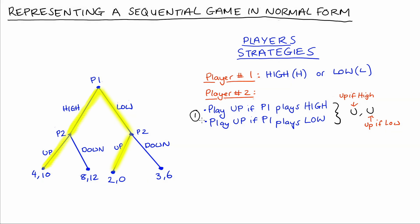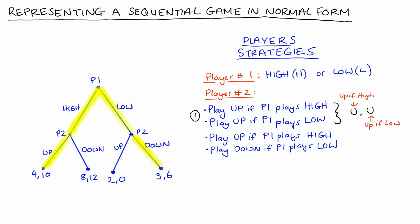Another possible strategy for Player 2 would be to play up if Player 1 plays high, but down if Player 1 plays low. These two statements count as a strategy because they describe Player 2's plan of action for each possible state they could find themselves in. I'll notate this strategy as UD: Player 2 plays up if Player 1 plays high, and down if Player 1 plays low.